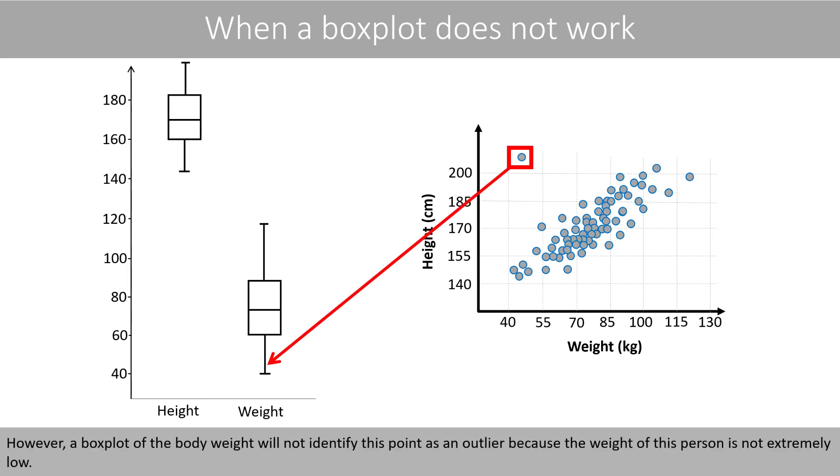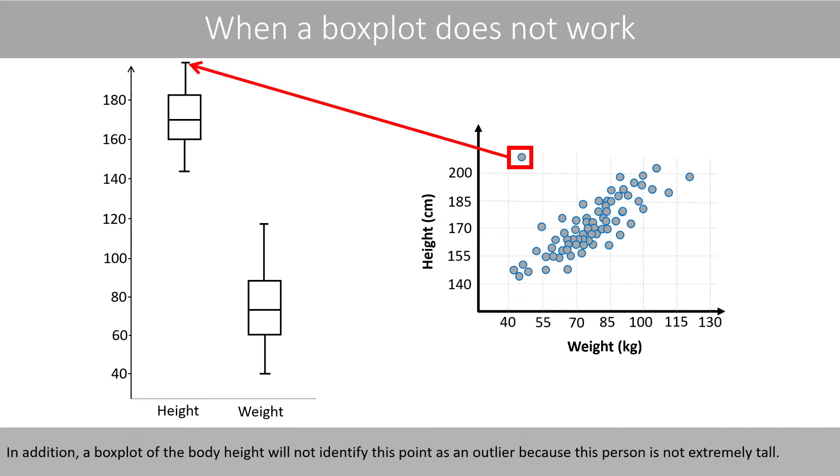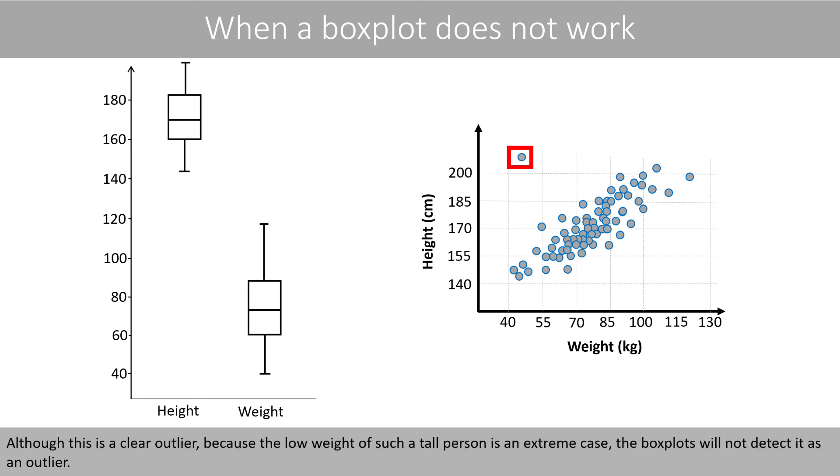However, a box plot of the body weight will not identify this point as an outlier because the weight of this person is not extremely low. In addition, a box plot of the body height will not identify this point as an outlier because this person is not extremely tall. Although this is a clear outlier because the low weight of such a tall person is an extreme case, the box plots will not detect it as an outlier.